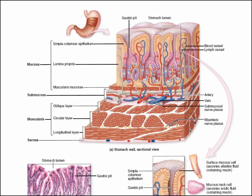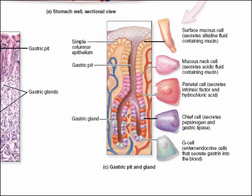Let's take a closer look at the mucosal lining of our stomach. The stomach is divided into several regions; one of the regions we'll discuss here is the fundus. In the mucosal layer, there are gastric pits as well as gastric glands. We're going to take a closer look at the components of the gastric pit and gastric glands. In the gastric pit, there are five different cell types.